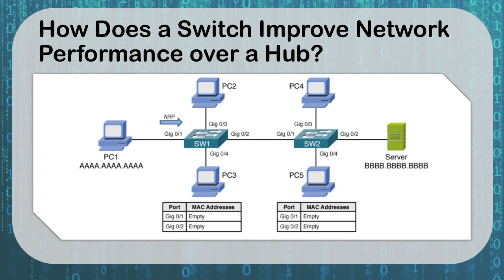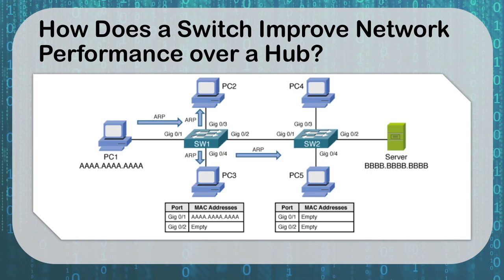How does a switch improve network performance over a hub? We have two switches, each with empty MAC tables. Let's say PC1 wants to send something to the server. PC1's MAC address is all A's, and the server's is all B's. When the switch sees the traffic come in — an ARP request asking who has BBBBBBBB — it sends that out every port because the table is empty. But it just learned that PC1 is on port 01, and fills that into its table before forwarding the request to everybody else.